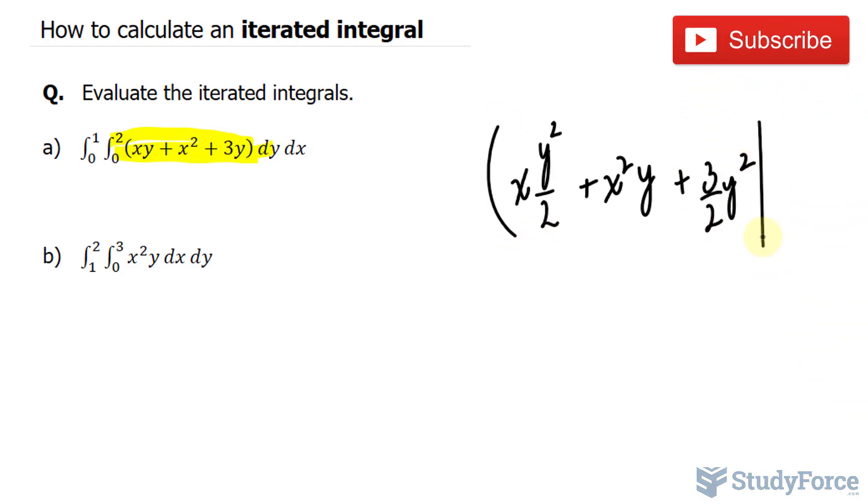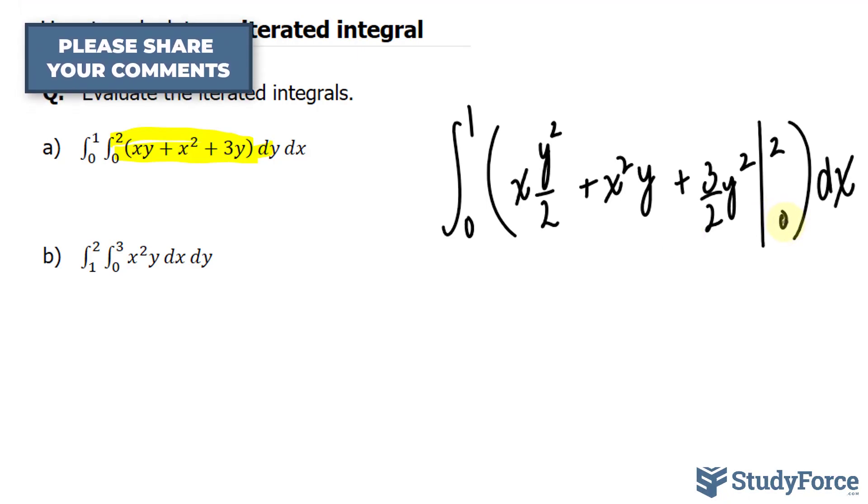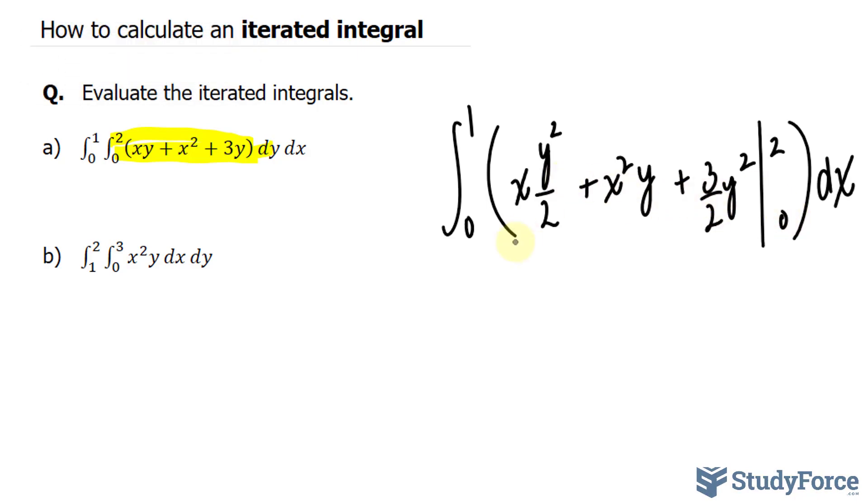This now needs to be evaluated between 2 and 0. And once we do that, we'll take the integral between 0 and 1 with respect to x. Now, without going into too much detail, at this point you would be substituting 2 and 0 wherever you see a y. So you'd substitute 2 into these y's, and then you would subtract it by substituting 0 into these. If you substitute 0 into each of these, you'll end up with 0, because in each term you have a factor of y. Therefore, your brand new integral will be 0 to 1.